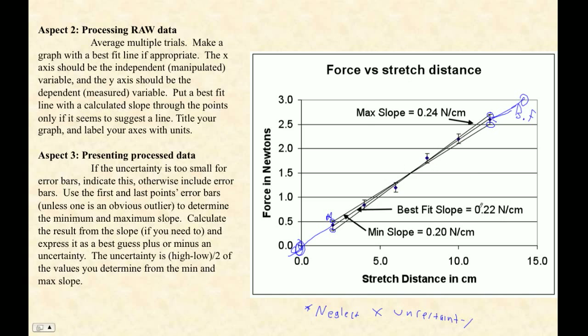And then when you determine the k, well this is newtons per centimeter. So this is k right there. And then the uncertainty of k is just this guy here, max, high minus low over 2. So the uncertainty of k is going to be 0.24, our max slope, minus 0.20, all that divided by 2. So that's 0.02 newtons per centimeter.